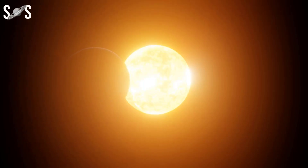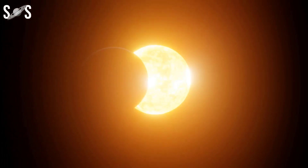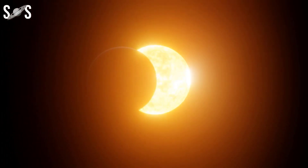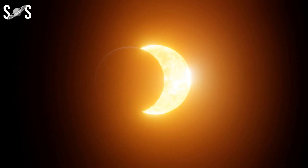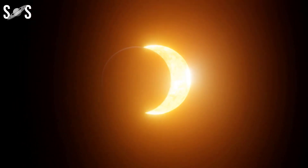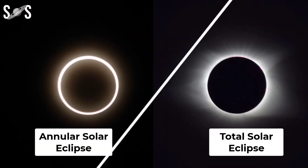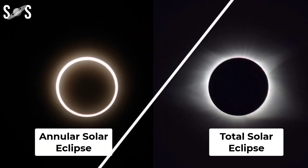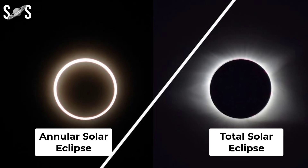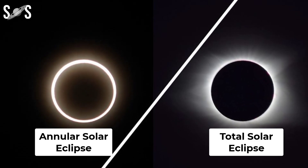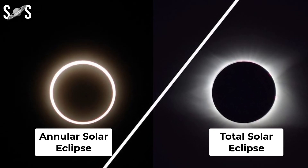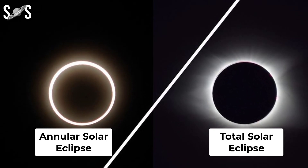A rare hybrid solar eclipse is coming. What is a hybrid solar eclipse? Since our planet has a curved surface, an eclipse can sometimes shift between annular and total as the moon's shadow moves across it. This is what is called a hybrid eclipse.